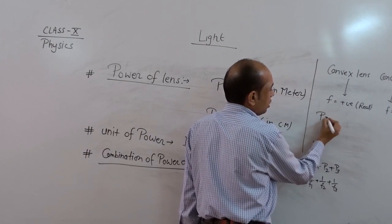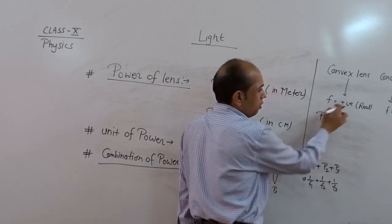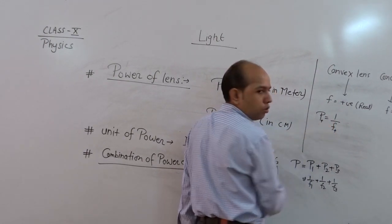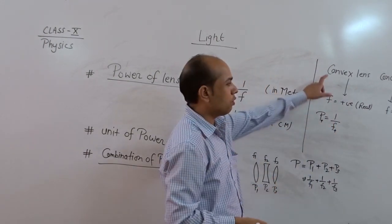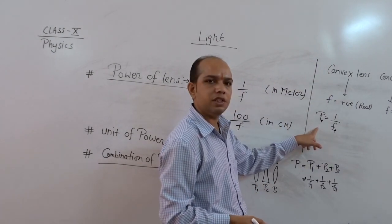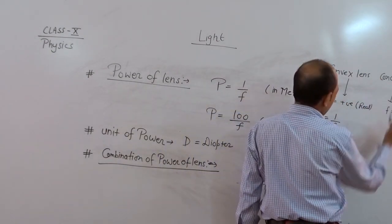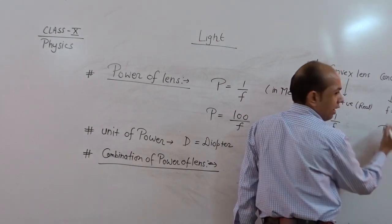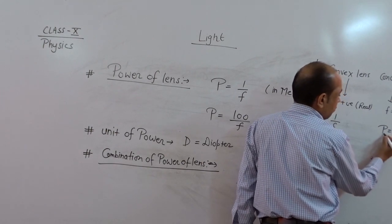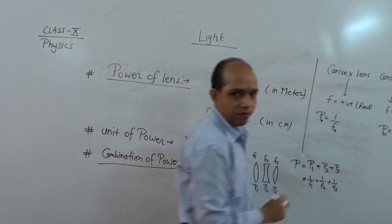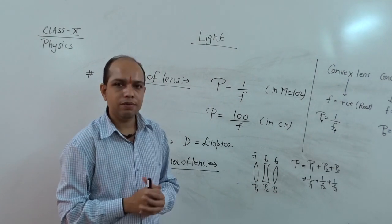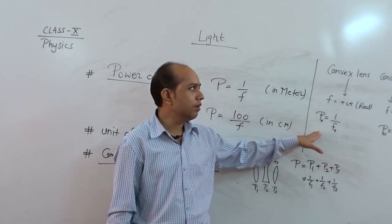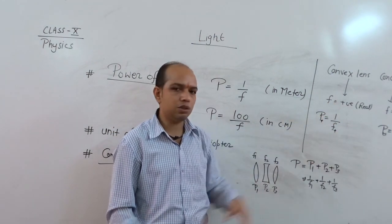So power is reciprocal of 1 upon f. So here focal length is positive, so power is also positive. That means for convex lens power is always positive. And if we talk about concave lens, power is equal to 1 upon f and f is here negative. So power is also negative. That means we may conclude that for convex lens power is always positive, while for concave lens power is to be negative.